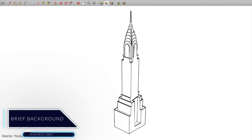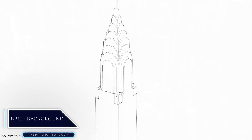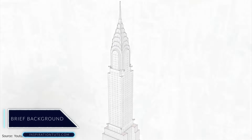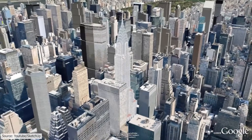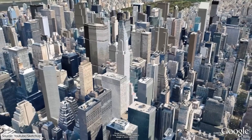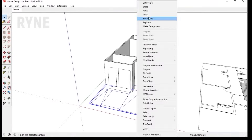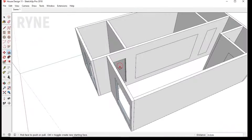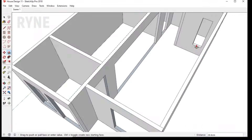A brief background. SketchUp was released in 2000 by Google. At first, it was completely free because big companies such as Google have funds to develop free software, and of course architecture students found it to be useful. After its huge success, Trimble, a software-leading company, bought it in 2012.